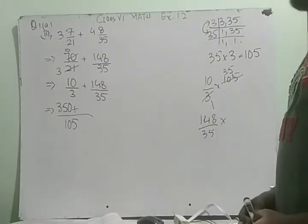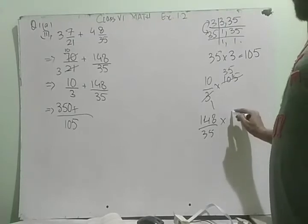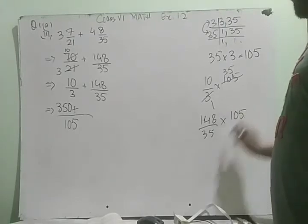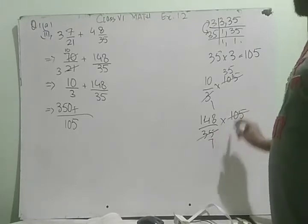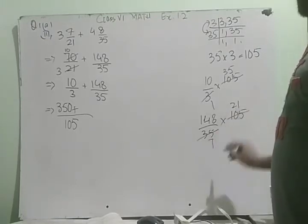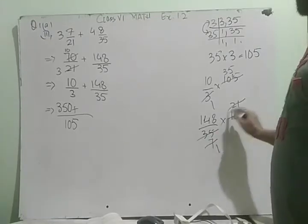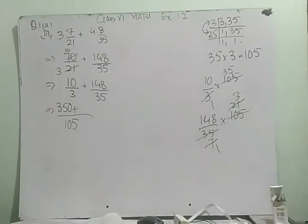Then we will try to get 148 upon 35. One is 35, 35. Now we will try to get 105. Five sevens are 35. Five twos are ten. Five ones are five. Seven ones are seven. Seven threes are 21. One forty-eight multiply by three.